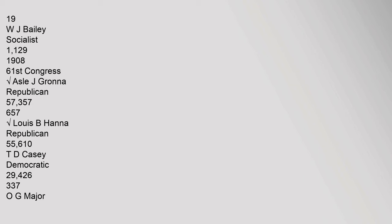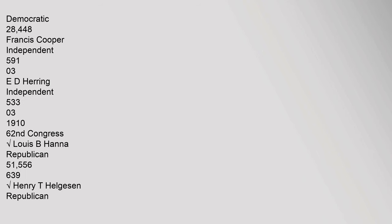1908 (61st Congress) — A.S.L.E.J. Grana, Republican: 57,357 (65.7%); Louis B. Hanna, Republican: 55,610; T.D. Casey, Democratic: 29,426; O.G. Major, Democratic: 28,448; Francis Cooper, Independent: 59,103; D. Herring, Independent: 53,303.